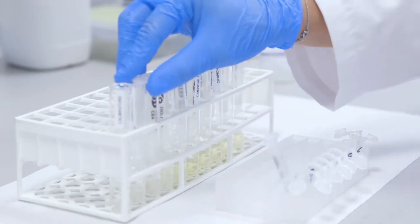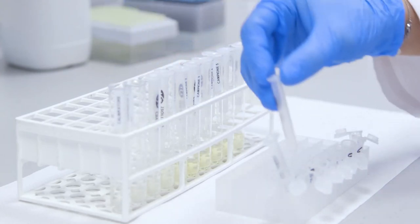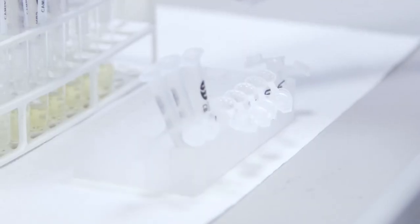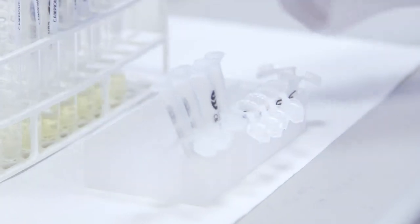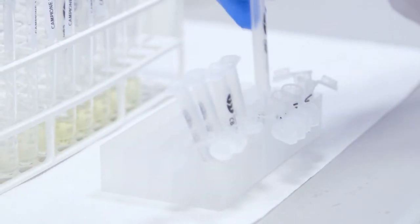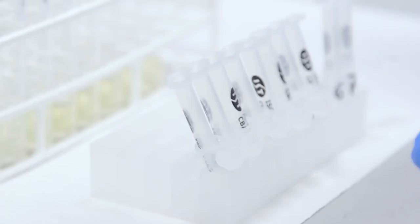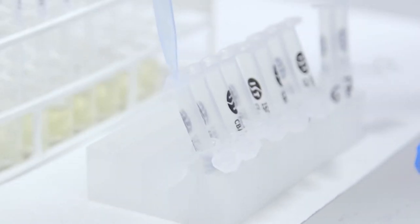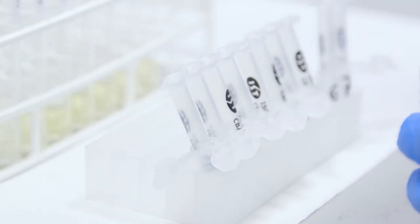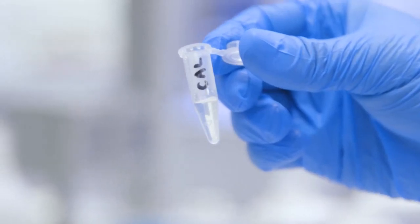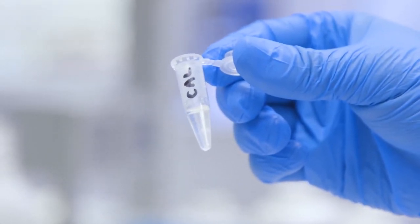Now we move on to the elution and collection of catecholamines from the SPE columns. Place the SPE column inside clean collection tubes. Add 400 microliters of reagent F to each SPE column taking care to collect the eluate. The elution takes place slowly for about one minute.